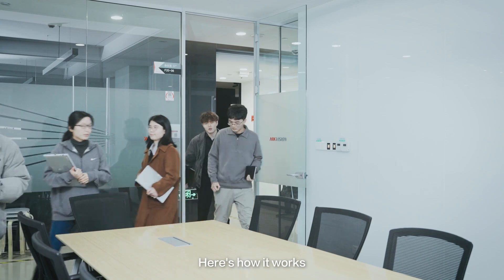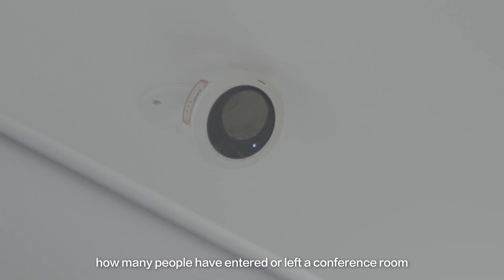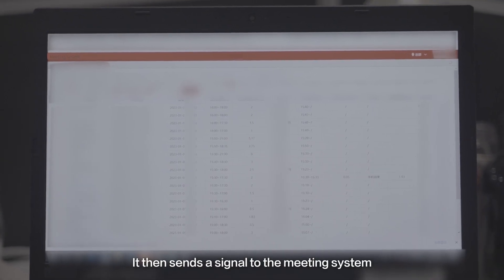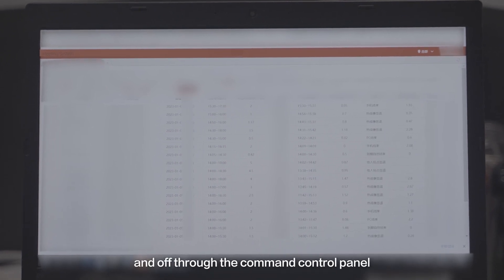Here's how it works. The thermal presence detector uses thermal imaging to identify how many people have entered or left a conference room. It then sends a signal to the meeting system, which switches the utilities on and off through the command control panel.